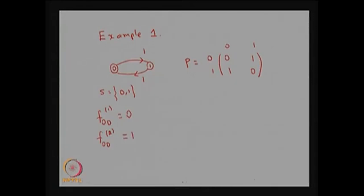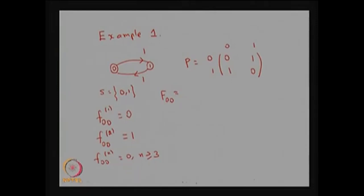Since the system returns to state 0 in exactly two steps, all further first-passage probabilities f_{0,0}(n) = 0 for n ≥ 3. Therefore, F_{0,0} — the probability of ever returning to state 0 starting from state 0 — equals 1. Since F_{0,0} = 1, we conclude that state 0 is a recurrent state.